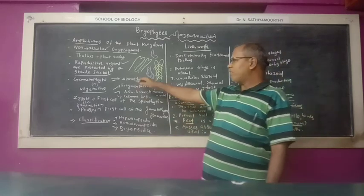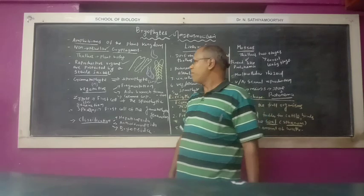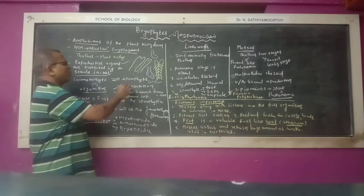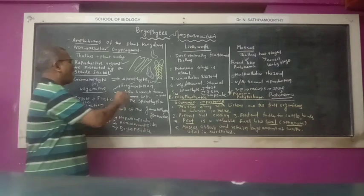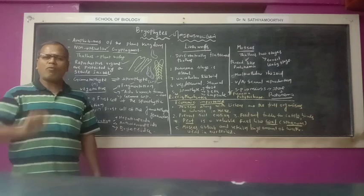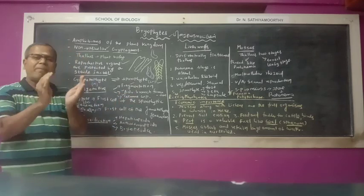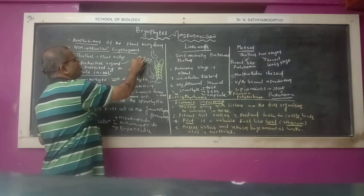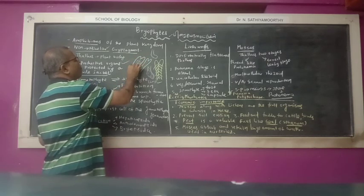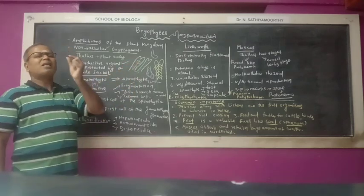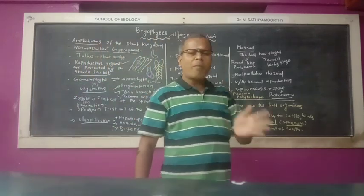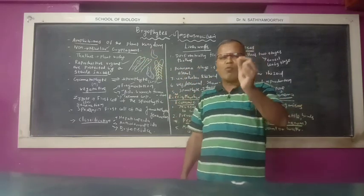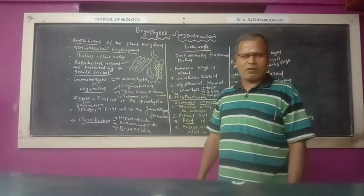Vegetative and sexual reproduction are reported in bryophytes. Vegetative reproduction occurs by fragmentation, adventitious branch formation, and gemma cup formation. Gemma cups are cup-like structures originated in the middle portion of the thallus. After maturity, the gemma cup is detached from the mother plant and develops into a new thallus.